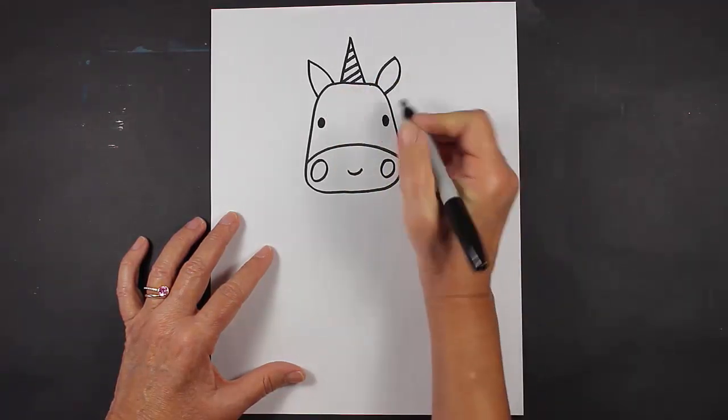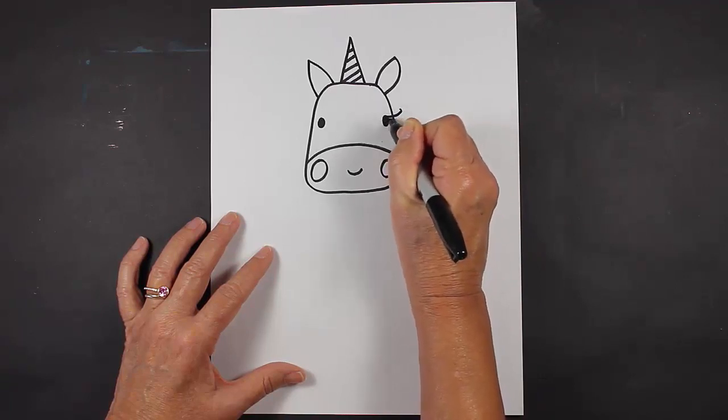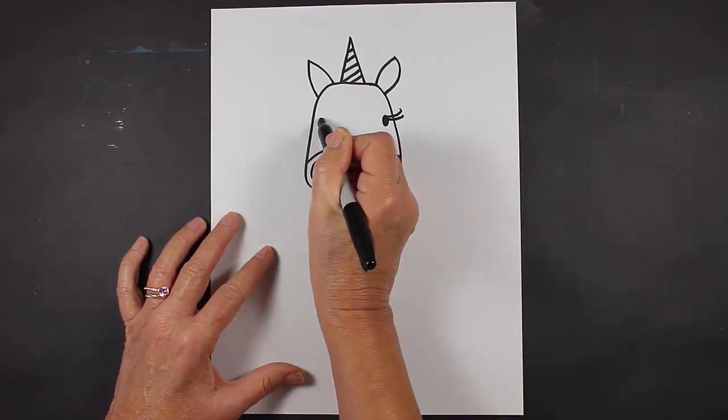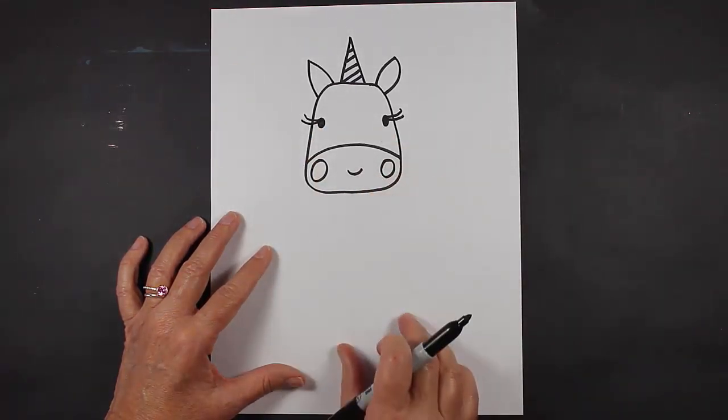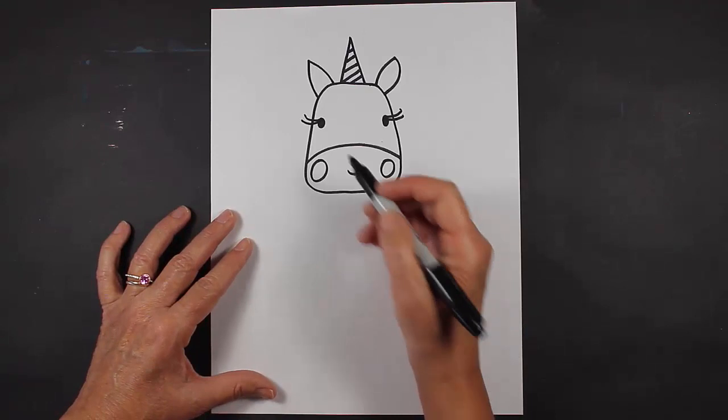And I like to make eyelashes, just two or three. Now let's move down to our unicorn's body.